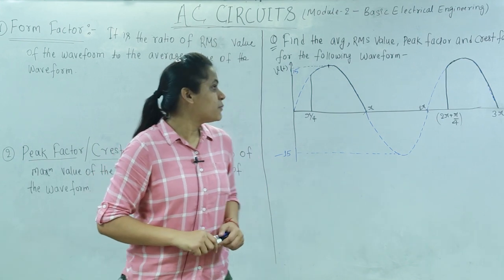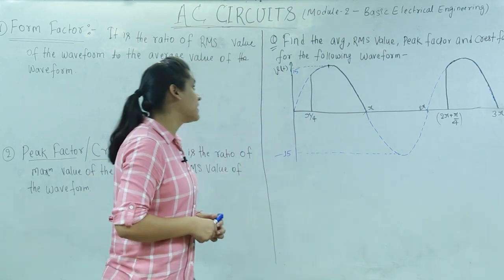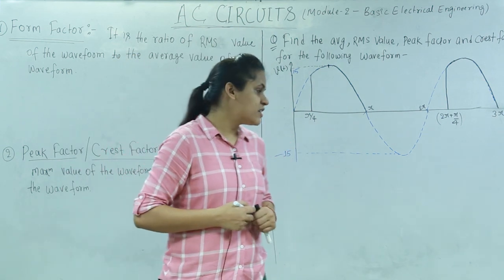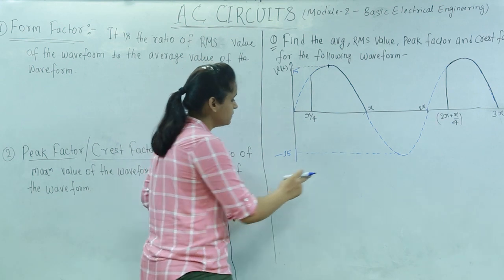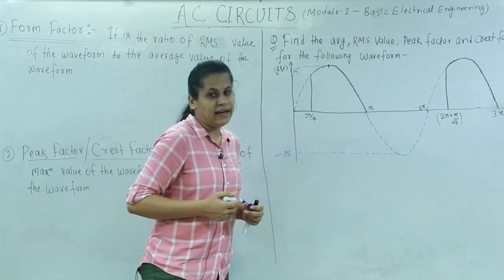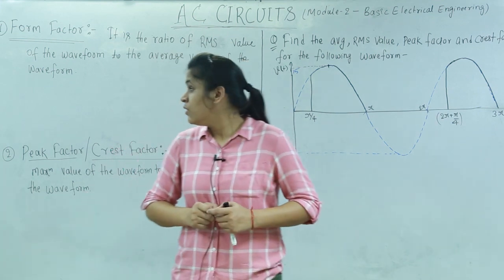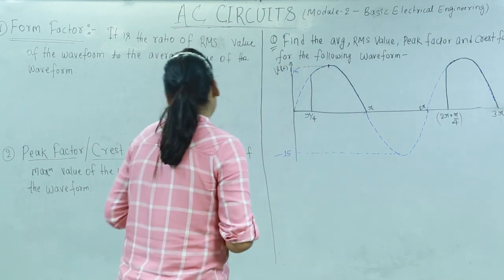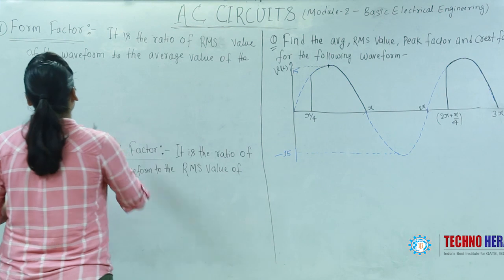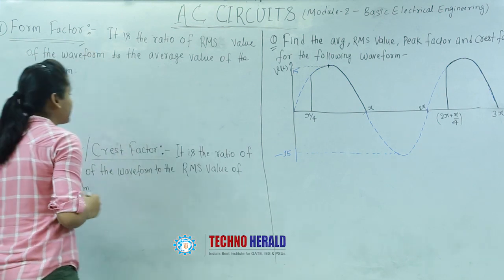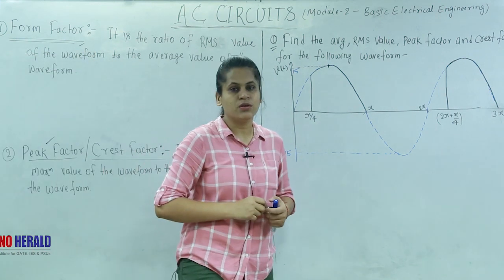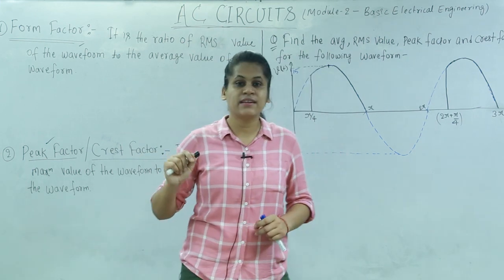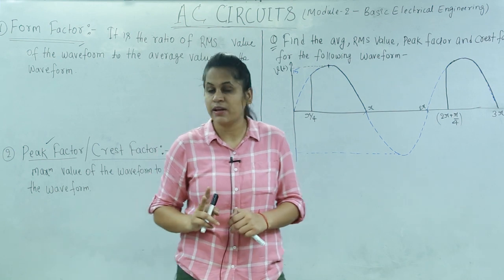Hello dear students. In our previous lecture we started studying AC circuits — we studied the various definitions, after that we studied the average value and RMS value. Now two more important terms are there in AC circuits: form factor and peak factor. From a theoretical point of view, these kinds of factors are asked in your examination for two-mark questions.